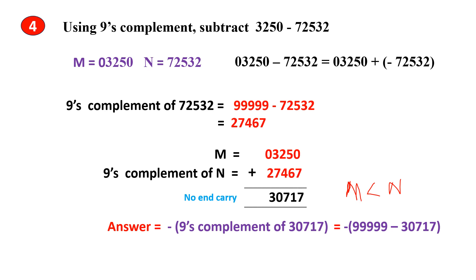When you solve this, the final answer will be minus — since there is a minus here, you put a minus, then the 9's complement. This is the answer.